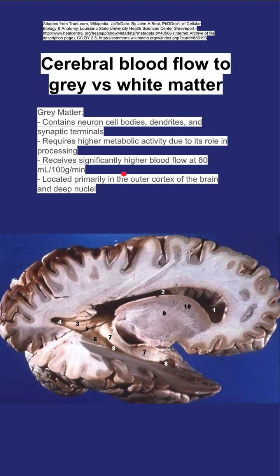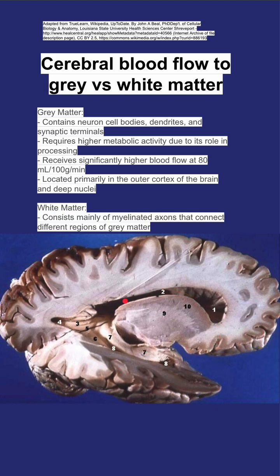Gray matter is located primarily in the outer cortex of the brain — you can see it on the outsides here. It's also found in the deep nuclei of the brain, which you can see on the inside here as well.